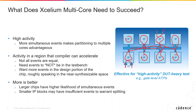During simulation, that activity will be distributed over multiple cores of a server to accelerate the design. We need that activity to be on something that can be accelerated. In general, Accelium multi-core can accelerate the near-synthesizable constructs of a design, and as such, it will focus on and accelerate the chip rather than the testbench. Larger chips have a higher likelihood of having simultaneous events — more to parallelize, more acceleration to be had. Smaller IP blocks may simply not have enough events to warrant using multiple cores.